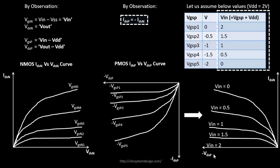The next step is to convert VDSP as a function of output voltage, because that's the voltage we are left with. We have the output voltage, the input voltage, and the common drain current. So we will be getting the load curve of a PMOS in that step. The next step is to convert VDSP into a function of output voltage, which is pretty simple.